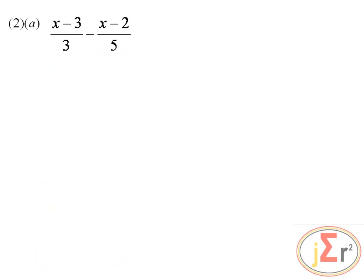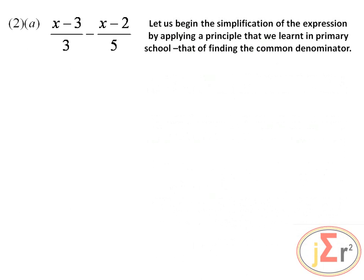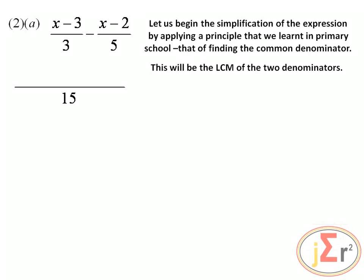We are required to simplify the algebraic expression. Let us begin the simplification by applying the principle of finding the common denominator, which we learned in primary school. This will be the LCM of the two denominators. The LCM of 3 and 5 is 15. So 3 into 15 is 5, and we say 5 times (x minus 3).